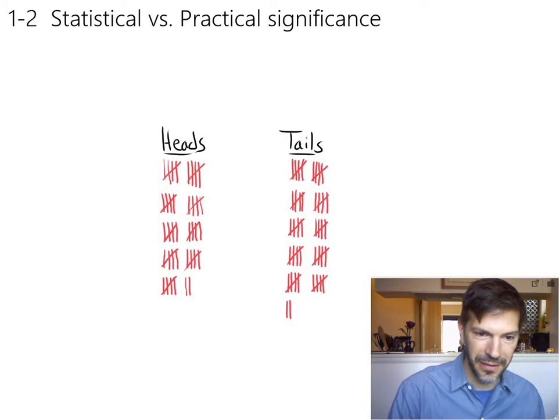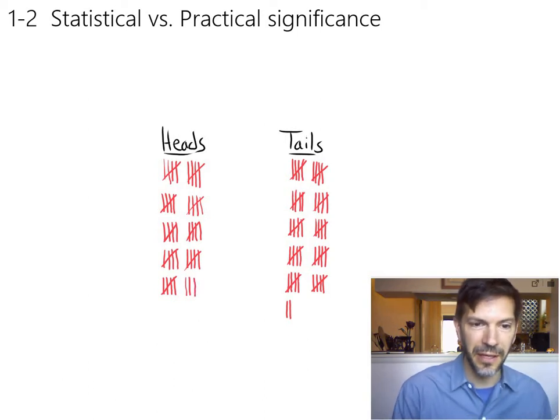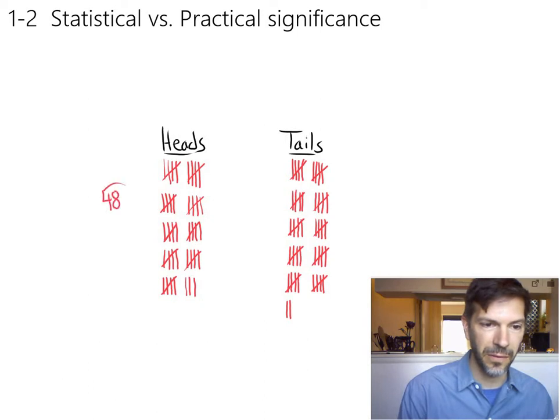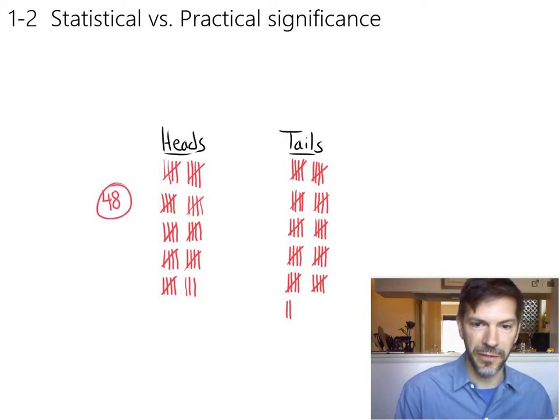Okay. Let's see, get my last heads. Okay. So we ended up with 10, 20, 30, 48 heads and 52 tails.